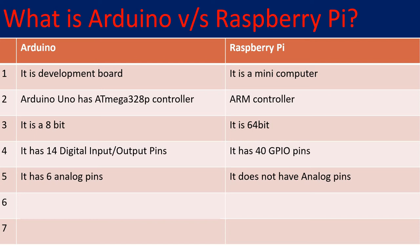Another major difference is with analog pins. Arduino has 6 analog pins to which you can connect analog sensors and implement your applications very easily. Whereas Raspberry Pi doesn't have analog pins, so if you want to connect any analog sensors you have to interface through an external ADC board. This is one of the key differences between the Arduino Uno and the Raspberry Pi.